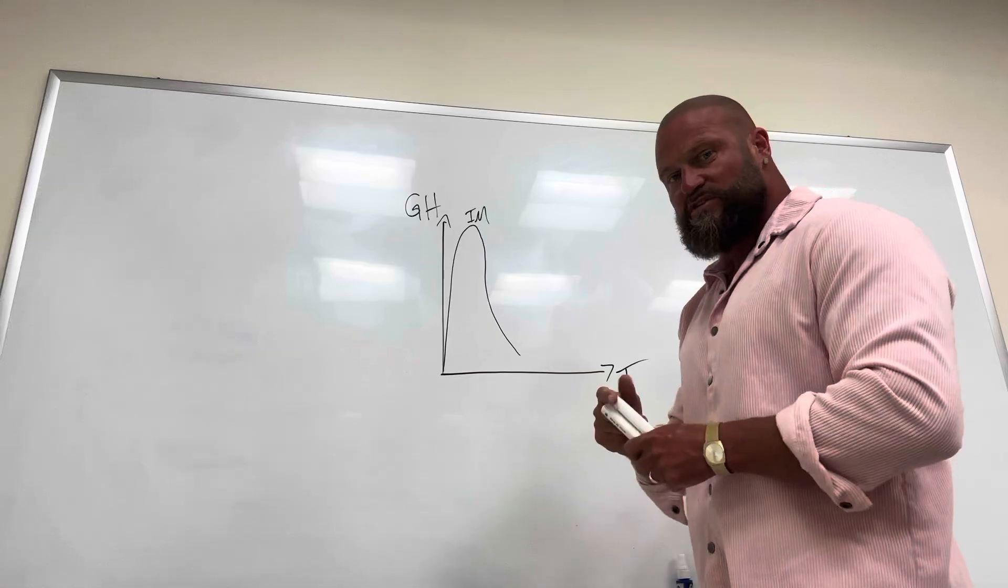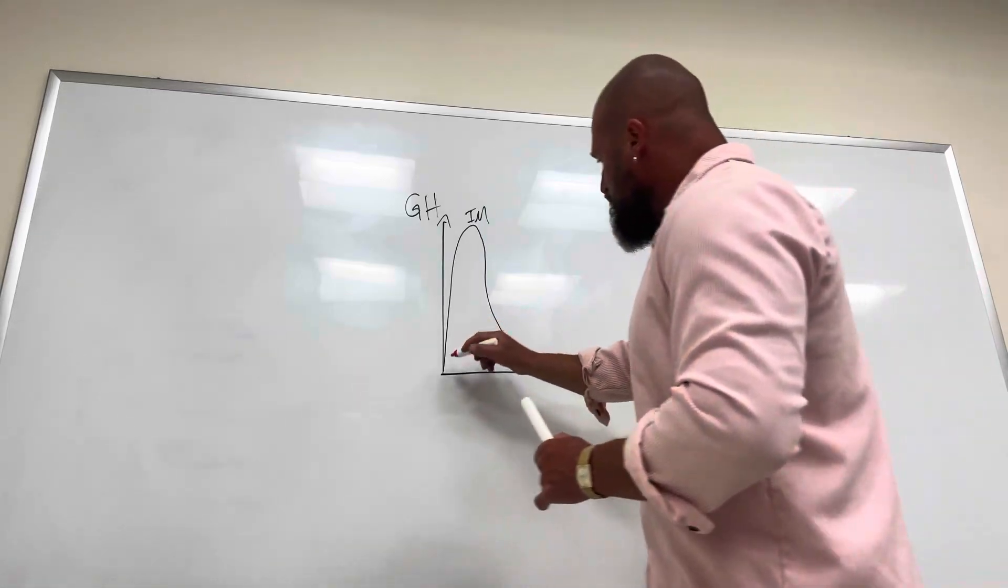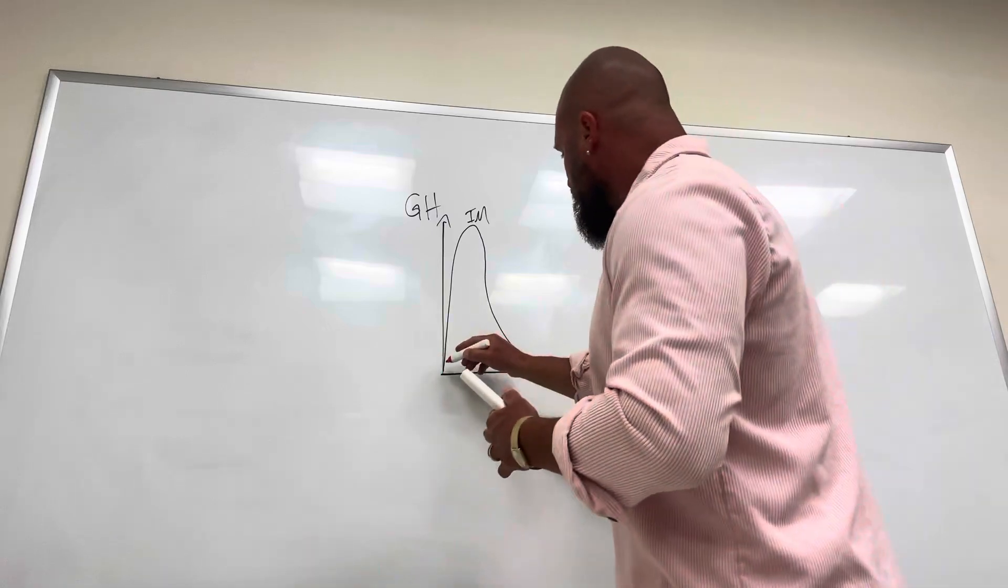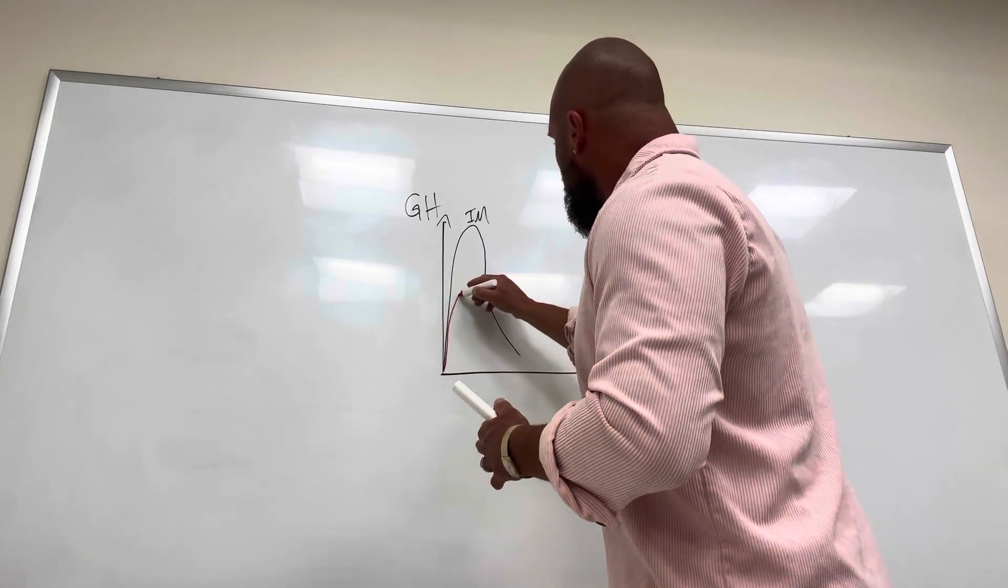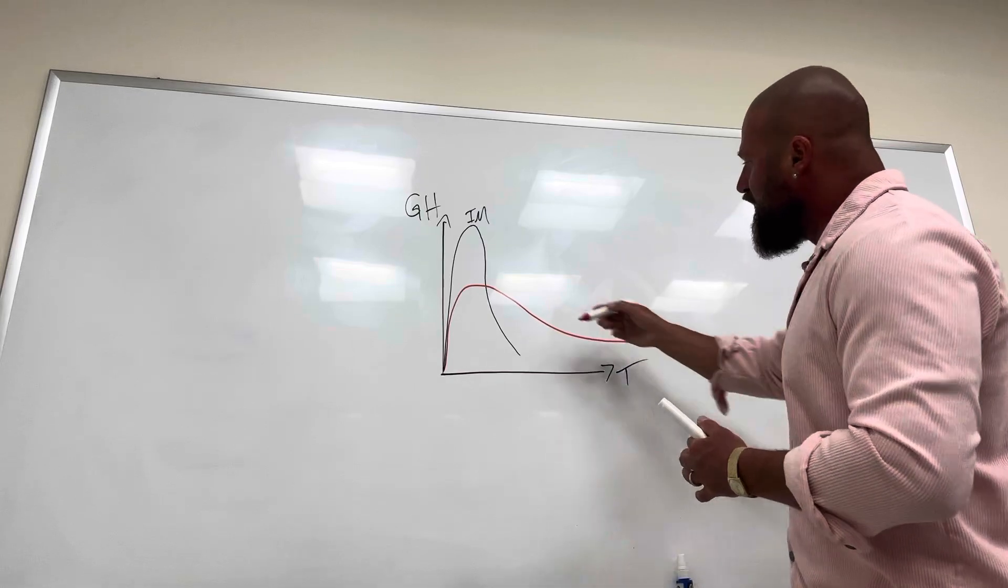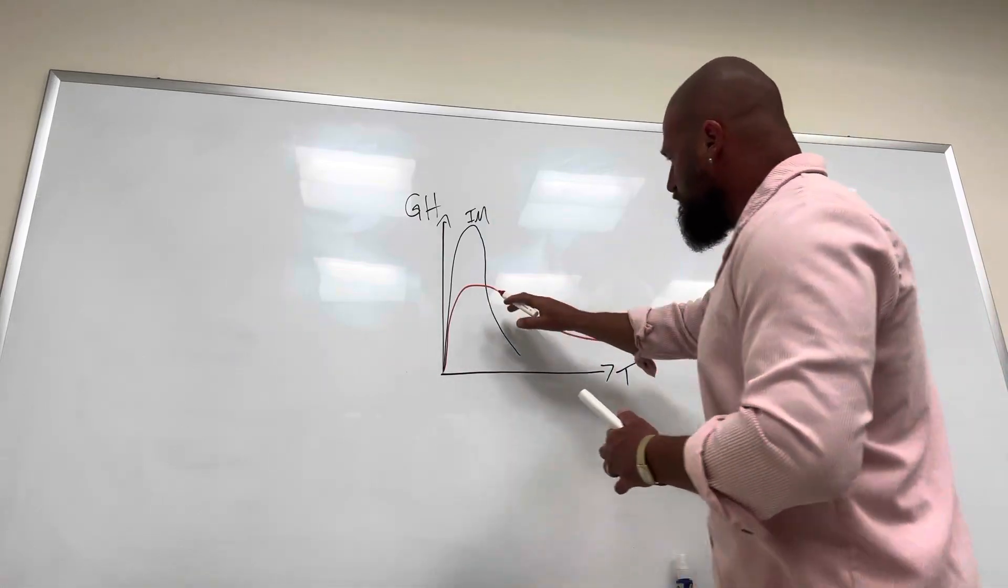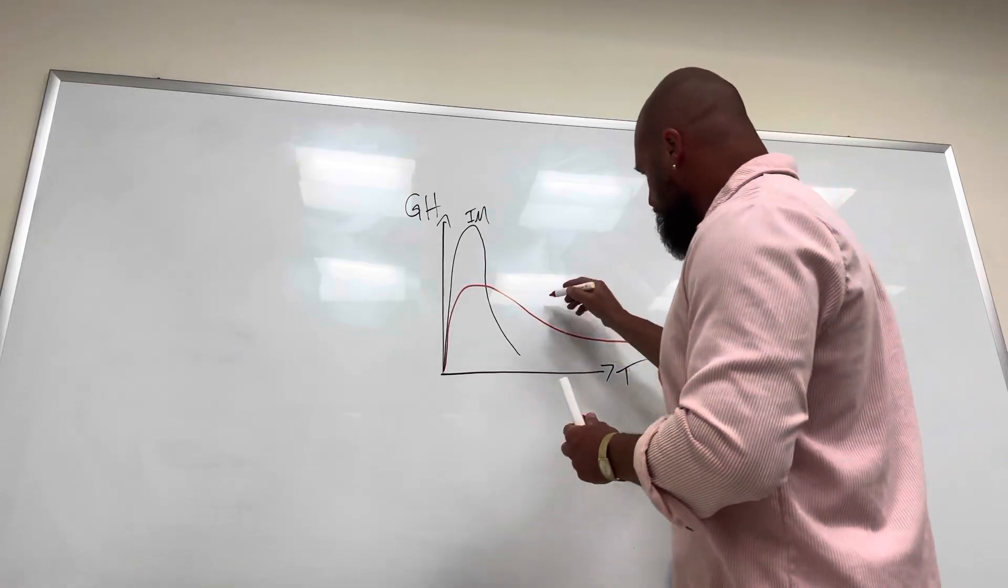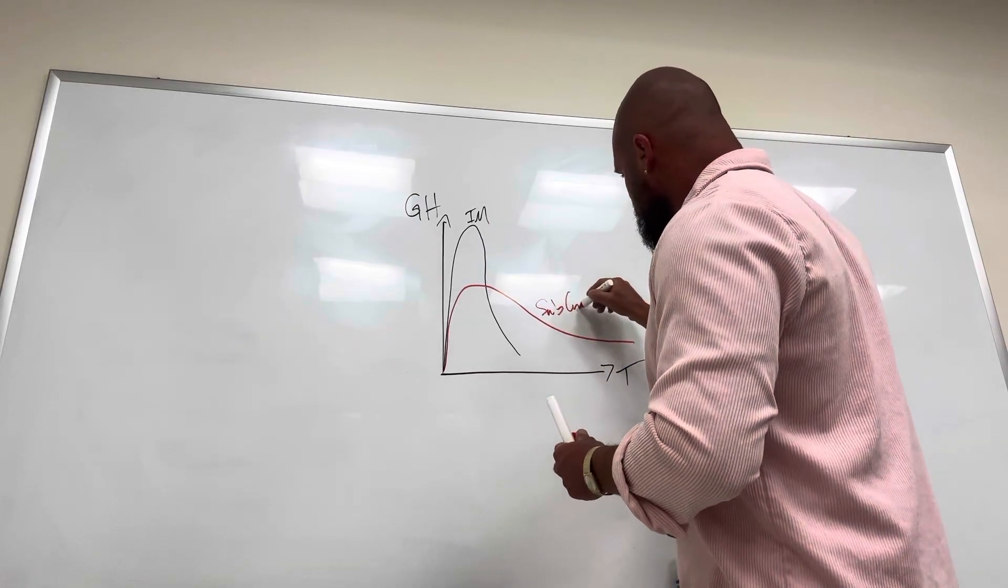What happens with subcutaneous injection? Subcutaneous injection absorption is much slower and the peak is much lower. So we have the subcutaneous injection. And as you can see, subcutaneous injection leads to this type of growth hormone concentration.